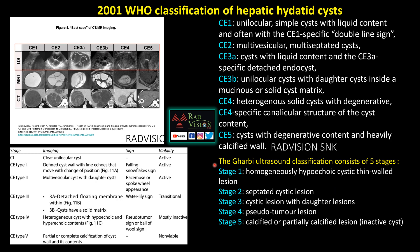Now we will look at the classification. This is the WHO classification of hepatic hydatidosis. The lesions are classified into CE1, CE2, CE3, CE3A, CE3B, CE4, and CE5. CE1 is a unilocular simple cyst. CE2 is a multivesicular and multiseptate cystic lesion. CE3 shows multiple detached laminated membranes. CE3B has multiple daughter cysts with mucinous or solid component. CE4 shows detached membranes with degeneration beginning. CE5 is a completely degenerated or inactive cyst.